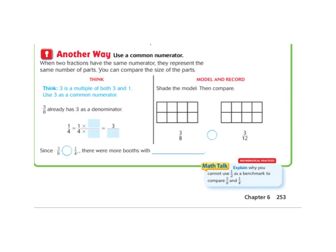And now, scooting down to the bottom of page 253, let's look at another way. We can change the numerators so we have common numerators. It says when two fractions have the same numerator, they represent the same number of parts. You can compare the size of the parts. It says, think three is a multiple of both three and one. Use three as a common numerator. Because remember our fractions that we're trying to compare are three-eighths and one-fourth.